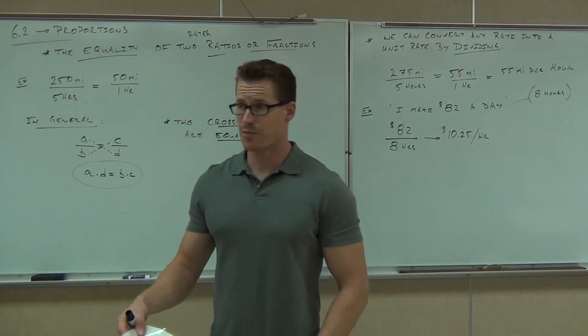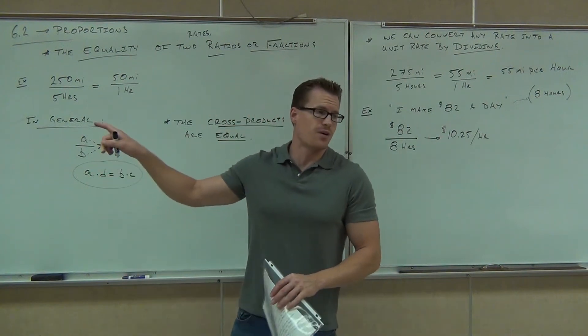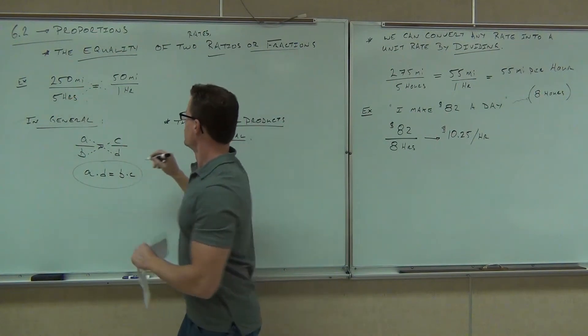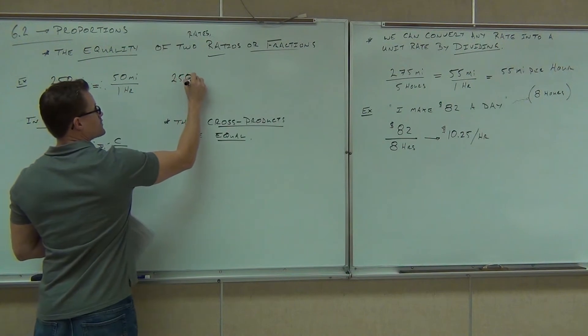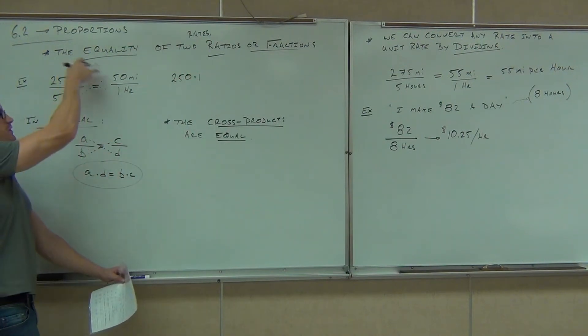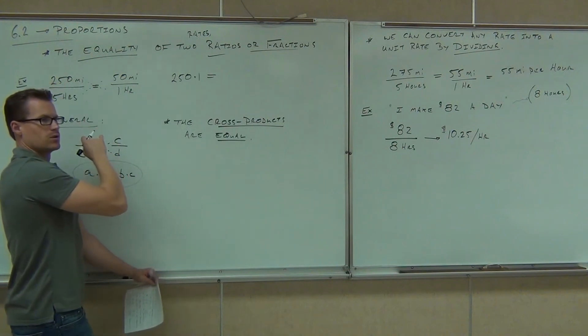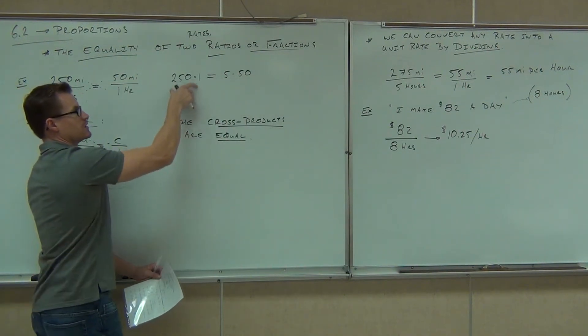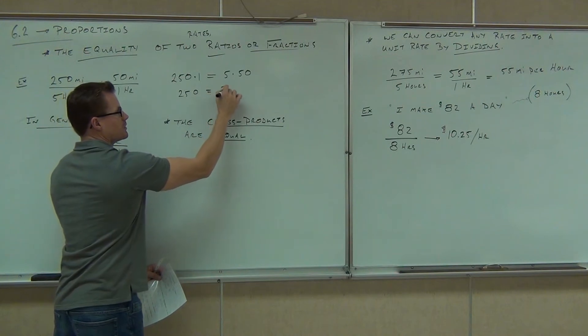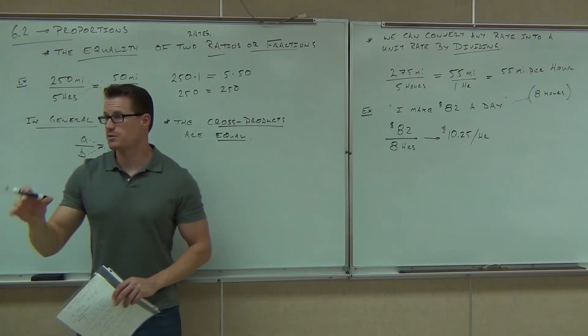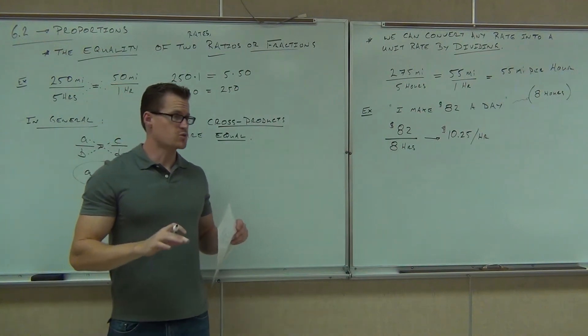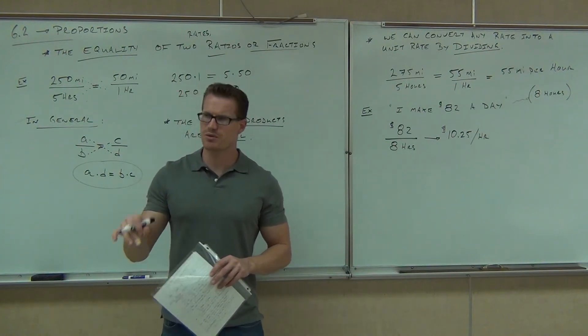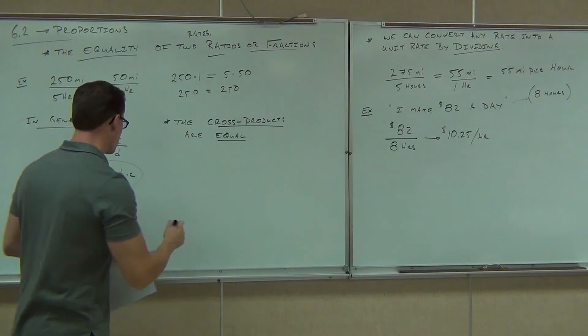For instance, we can verify that this is a true proportion. If you do the cross product here, you would get 250 times 1. Do you see where those numbers are coming from, folks? Yeah. 250 times 1 equals, what's it got to equal? 5 times 50. Do you see where those numbers are coming from? What's this side give you? What's the other side give you? Are they equal? That means that I started with a valid proportion. If they ever come out to be unequal, then you know that that proportion was not a true proportion or not a valid proportion. Would you like to see a couple more examples of that? Sure. So right here, you're verifying whether these proportions are accurate or not, basically. So let me give you a couple examples.